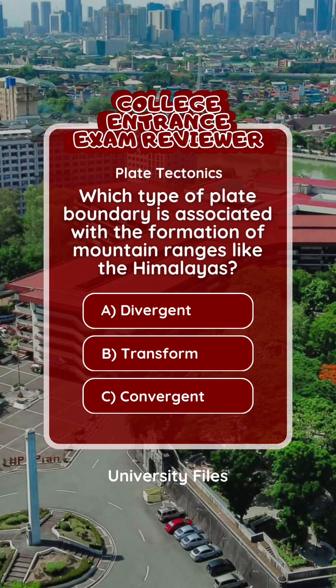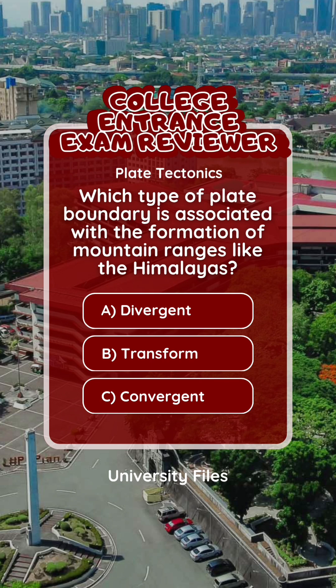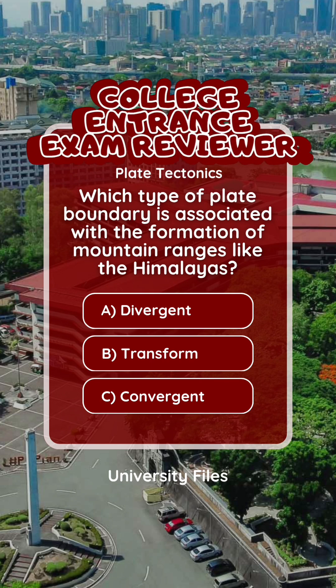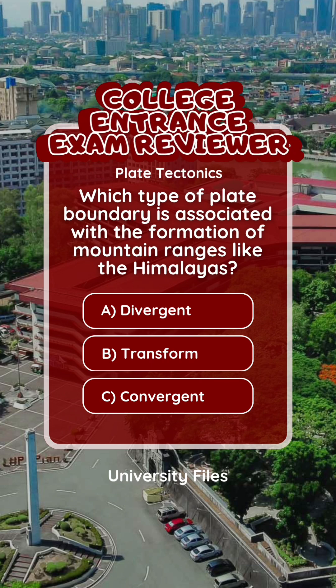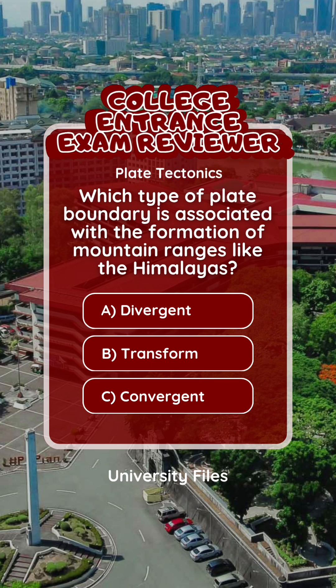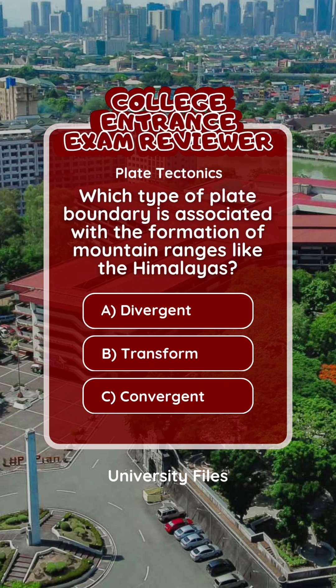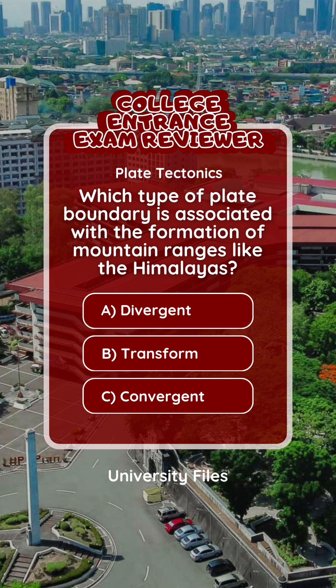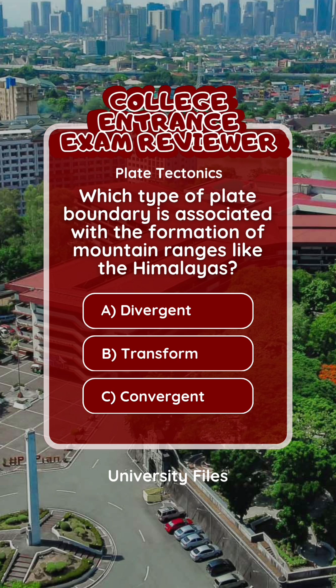Question 2: Plate tectonics. Which type of plate boundary is associated with the formation of mountain ranges like the Himalayas? A. Divergent. B. Transform. C. Convergent.